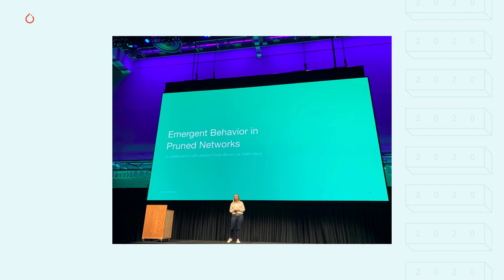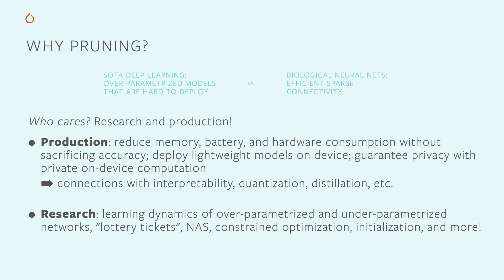But why pruning and why then? In my day-to-day job I'm a researcher at Facebook AI Research and I focus on the scientific understanding of the dynamics of learning in neural networks, specifically with respect to over-parameterized versus compressed models. One way to compress models is by pruning connections or units. There has been plenty of research recently focused on pruning and on the properties of these sparse networks, and on the production side many teams have dealt with the practical issue of deploying very large networks and the desire to slim them down and make them more efficient.